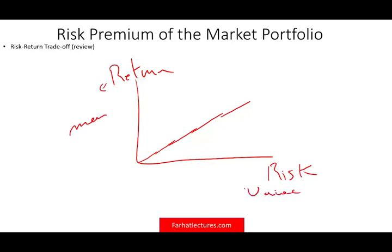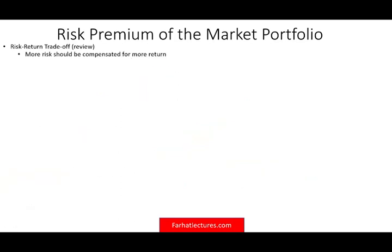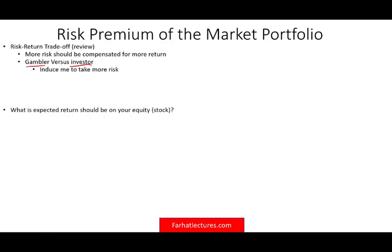Sometimes we call it the mean-variance analysis — it's the same thing. The basic idea is that more risk should be compensated with more return. If you're going to take risk, you expect more return. You're not a gambler. A gambler will take risk without expecting return. As an investor, for you to take an additional position in a stock, equity, bond, or any type of investment, you expect additional return to justify that additional risk. You need to be induced to take more risk, induced with more return.